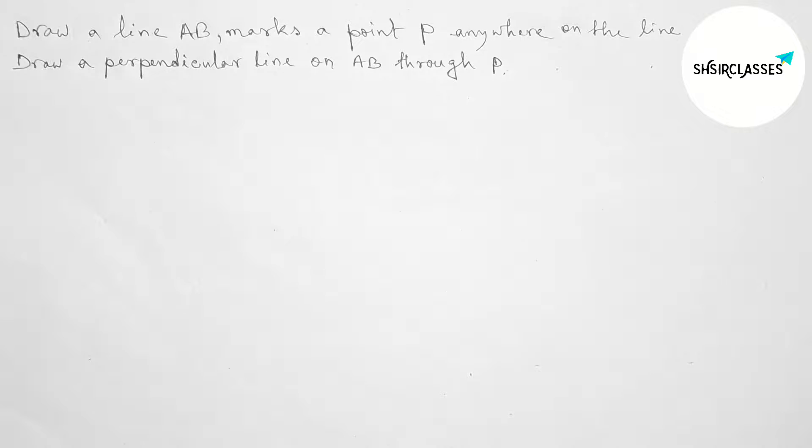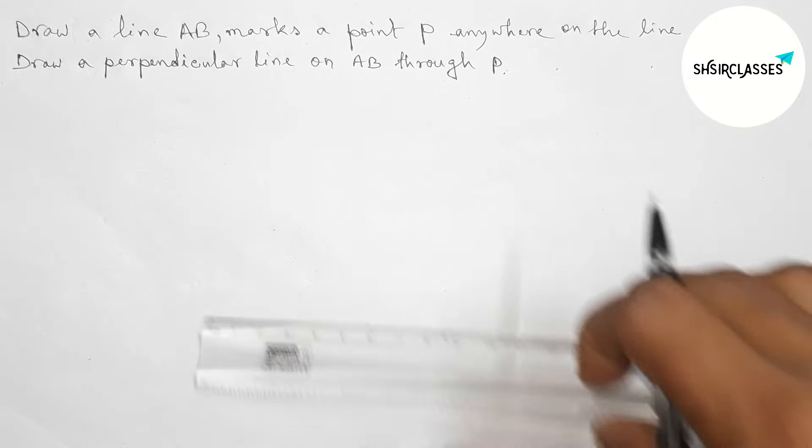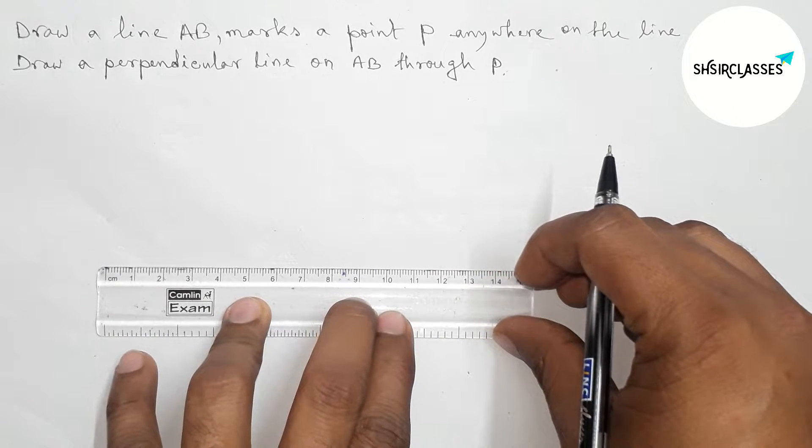Hi everyone, welcome to SI Share Classes. Today in this video I am going to construct a perpendicular line. First, draw a line AB, mark a point P anywhere on the line AB, then draw a perpendicular line on the line AB through point P in an easy way. So let's start the video.